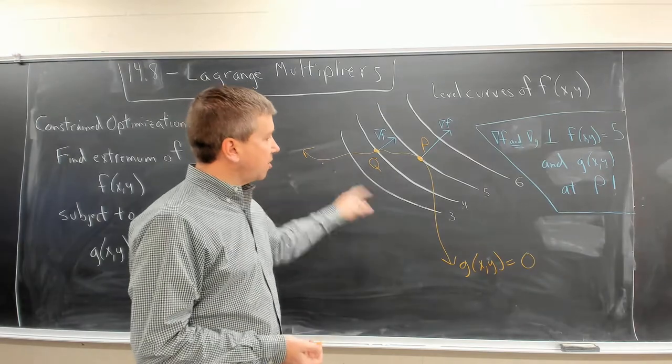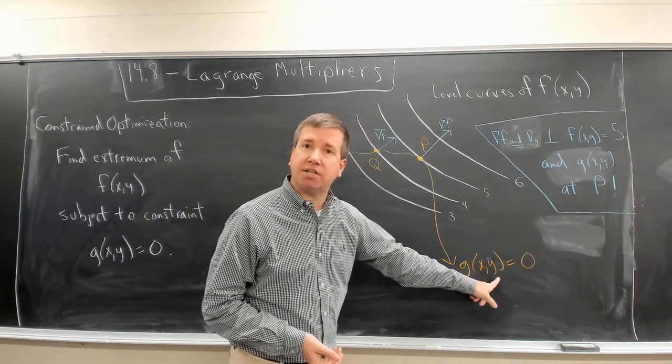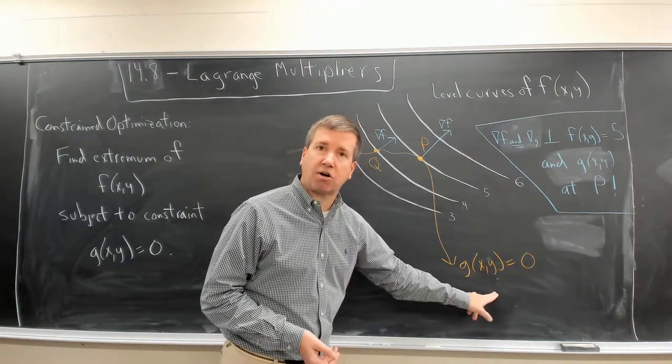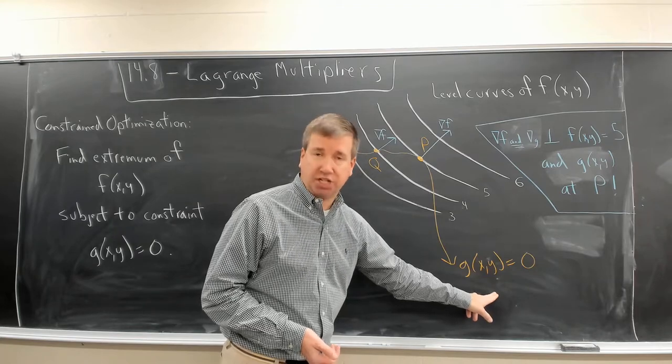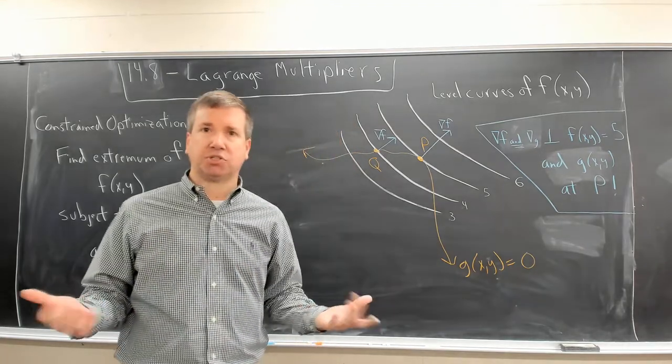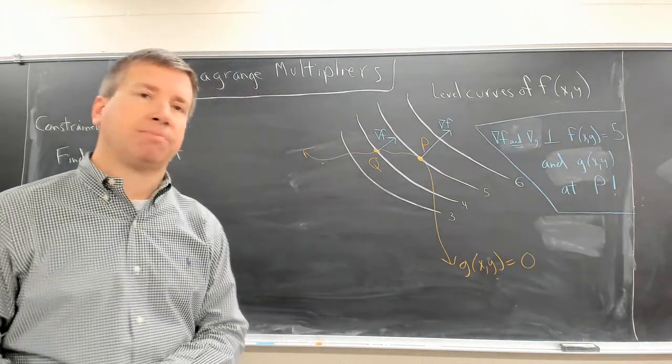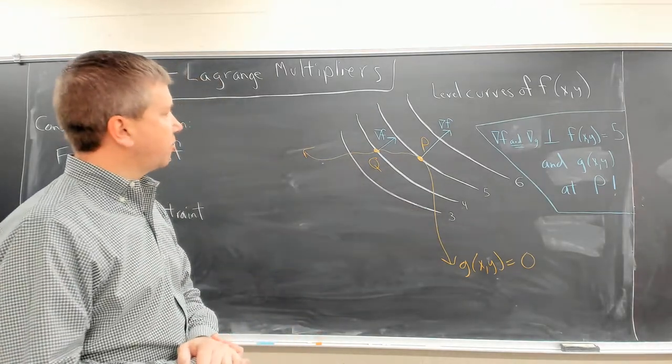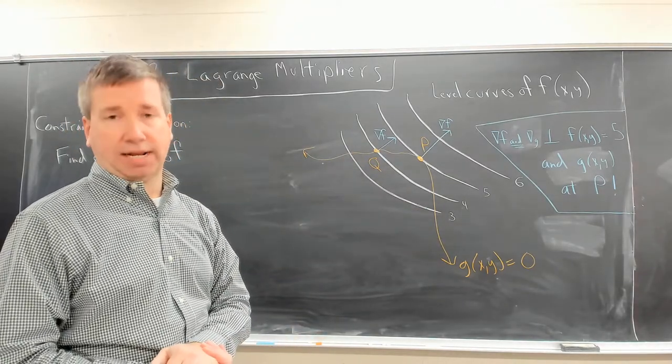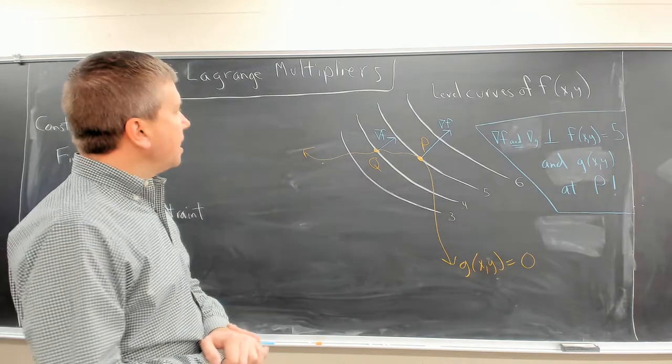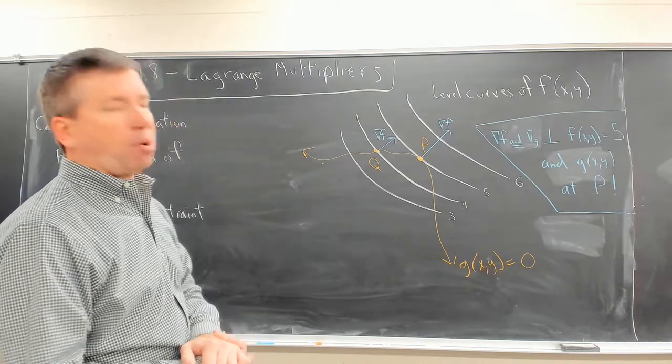The orange curve is the graph of the constraint. This is just a curve in the x, y plane. G of x, y equal to 0. It's just an implicit description of a curve. So let's let this orange curve here be the constraint. Now, I've identified a couple of points here.